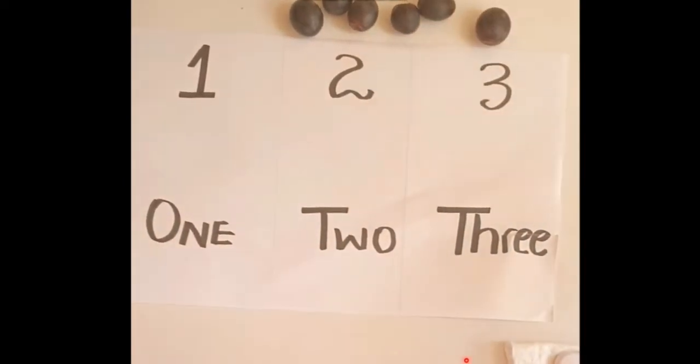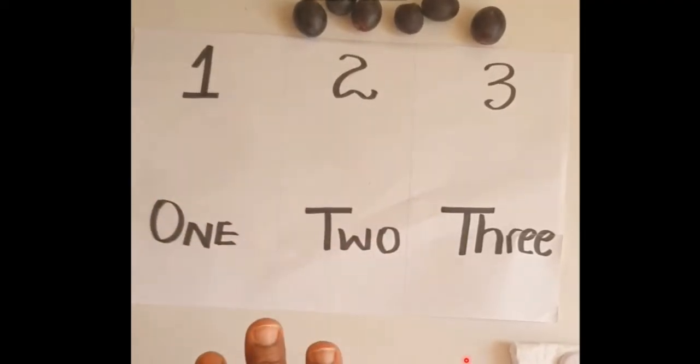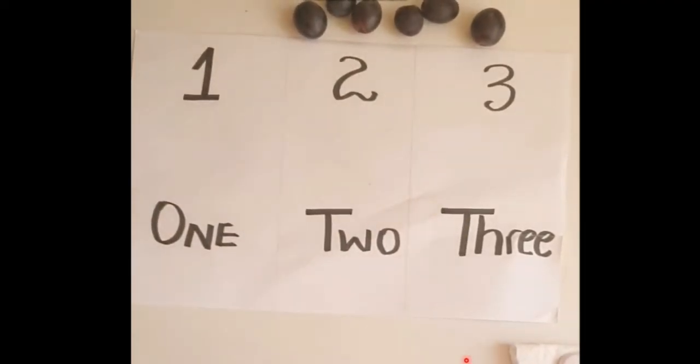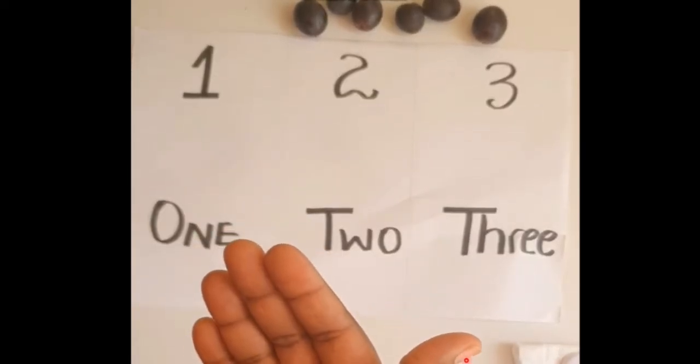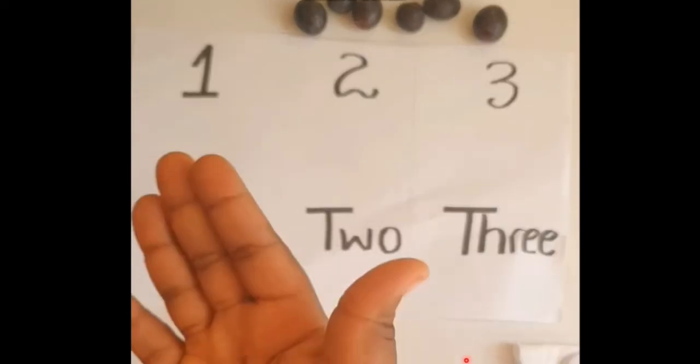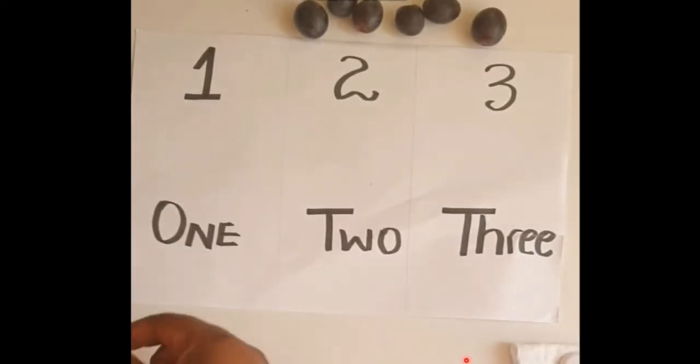And we are not limiting counting to just strokes on papers and stuff like that. We want them to actually see what the quantity represents. What does 1 represent? What does 2 represent? We want them to actually see.